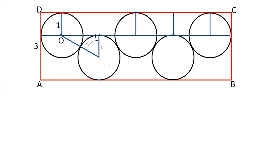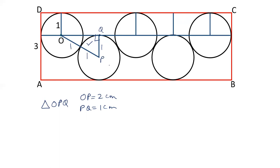Let's name this triangle — point P, point Q. So now we are talking about triangle OPQ. In triangle OPQ, the length of OP is 1 plus 1, which is 2 cm. PQ is equal to 1 cm and angle Q is 90 degrees. So we can apply the Pythagoras theorem.